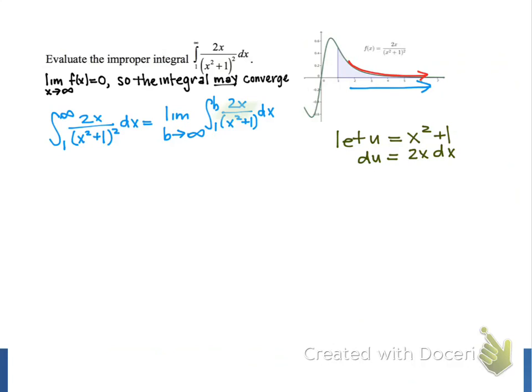Now we can write our indefinite integral in terms of our new variable u, and the result is the integral of 1 over u squared du. To make this new integral easier to evaluate, we can rewrite the integrand as u to the negative 2 power, so we can use the power rule for integration.